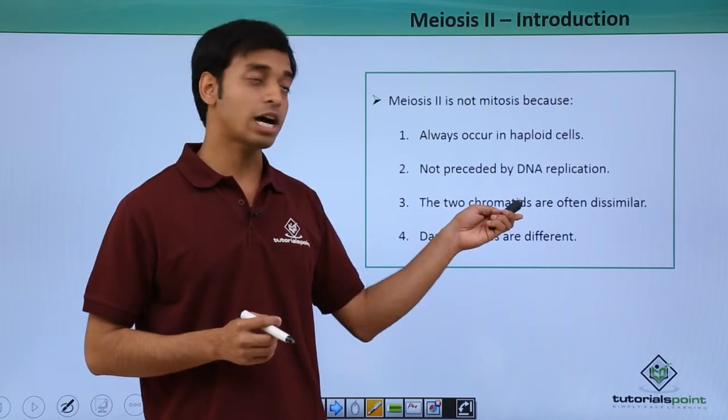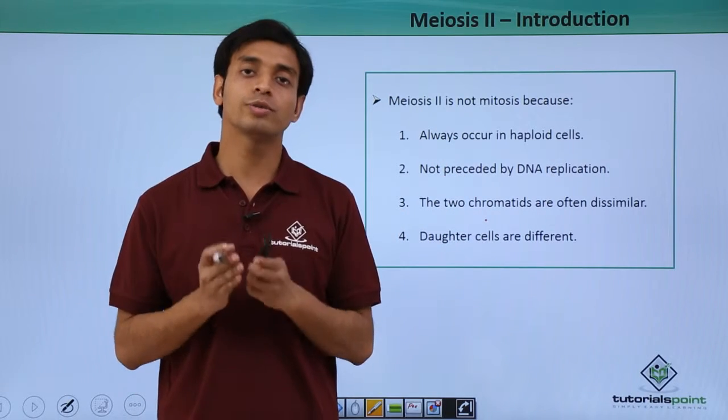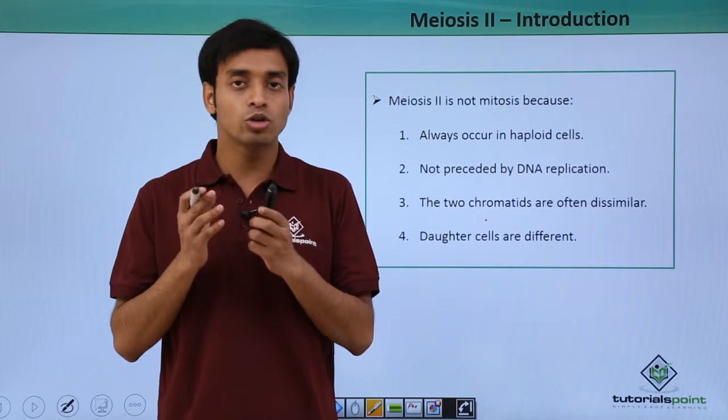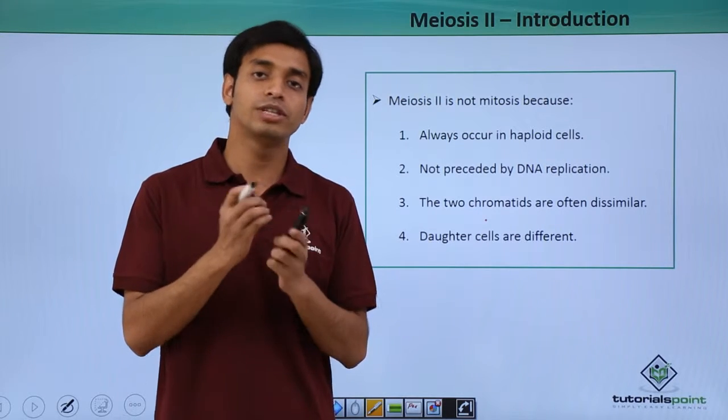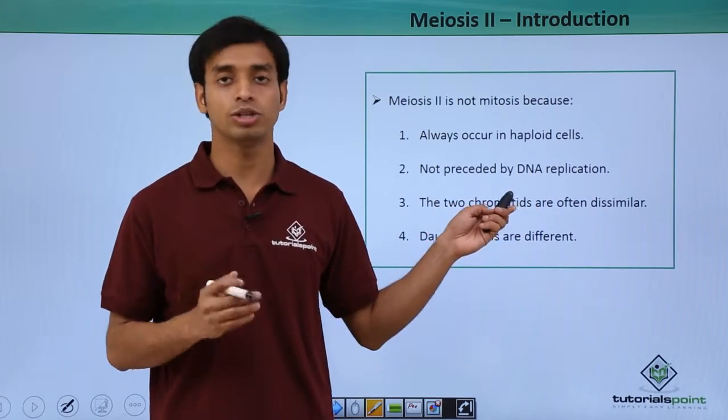The two chromatids are often dissimilar. Why? Because in Meiosis I, because of the process of crossing over, the chromosomes have exchanged their genes to some extent. So they will never be absolutely similar to each other.